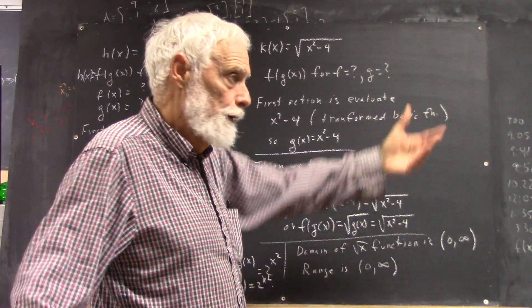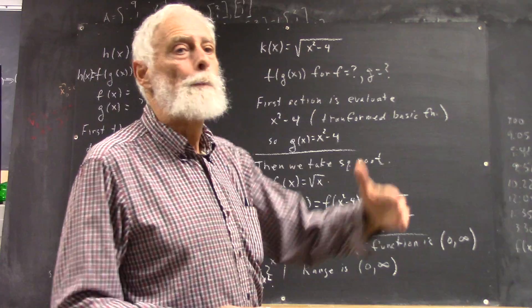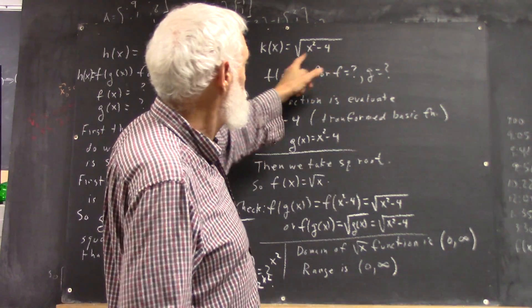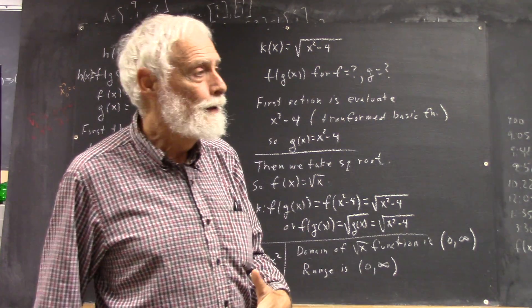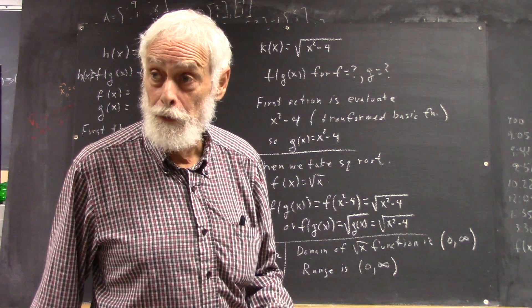And positive 2, well, it's going to give you 0. Any number bigger than 2 is going to have a square that's bigger than 4. Any number less than negative 2 is going to give you a square that's bigger than 4.